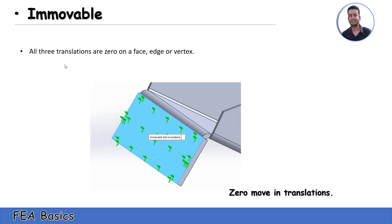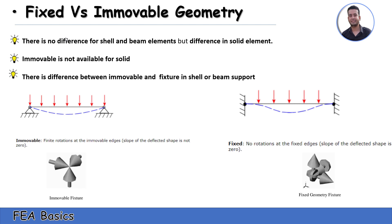The second type is immovable. Immovable fixtures are used for surface or shell elements only — we have zero movement in translation and it is not available for solid elements. Comparing fixed geometry and immovable: there is no difference for shell and beam elements, but there is a difference for solid elements — immovable is not available for solid. Immovable and fixed geometry are also different for beam support. For a hinge support with no zero deflection at the start, we can use immovable fixtures. But for fixed geometry, which gives zero translation and zero rotation, we use fixed geometry.